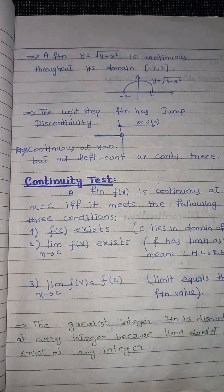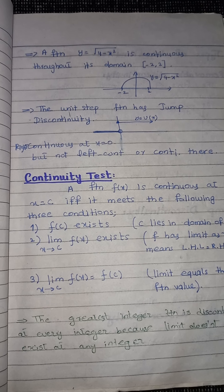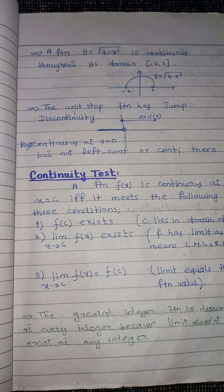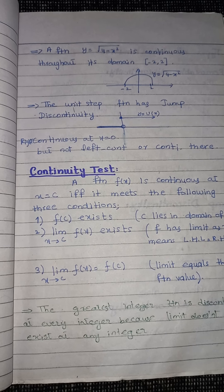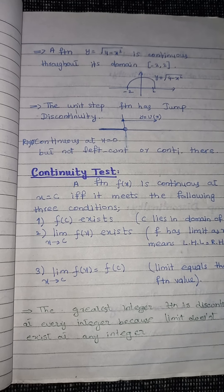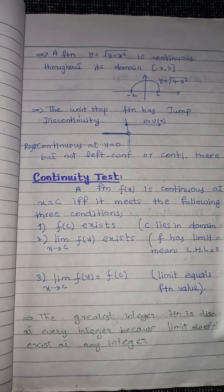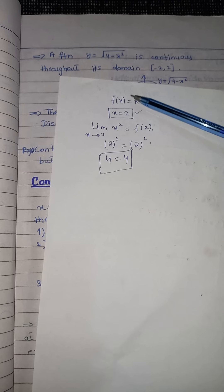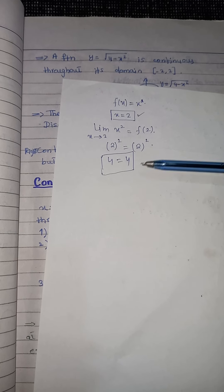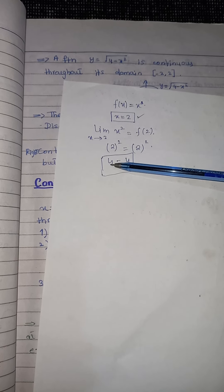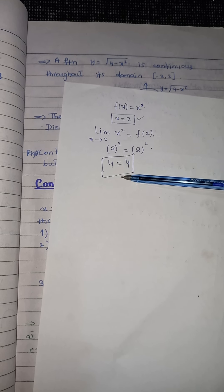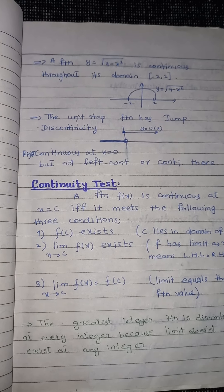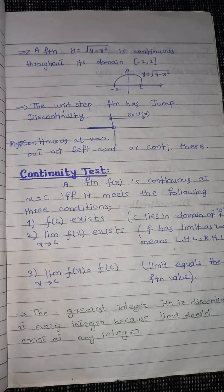That is, the value f(c) must equal the limiting value. As I discussed in the example, we first check f(2), then check the limiting value, and if both are equal then we say the function is continuous. That is all about today's lecture.